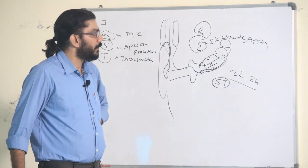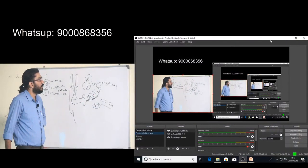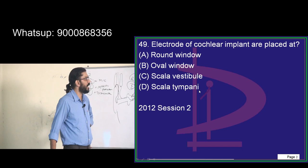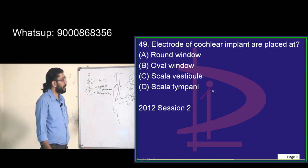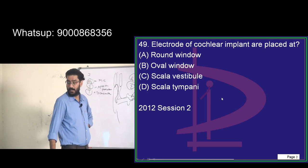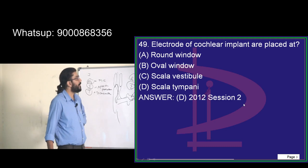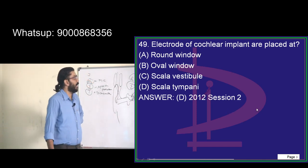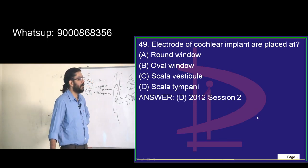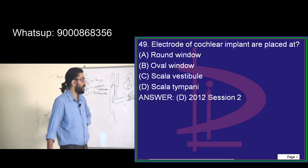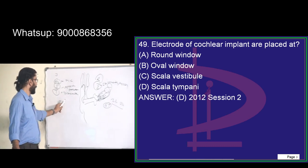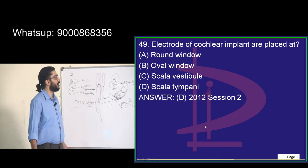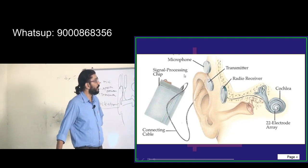Most of what you need is basic understanding only. Key structures: round window, oval window, scala vestibuli, and scala tympani. The oval window is at the top, and the round window is below it. The electrode goes through the scala tympani. In front of the round window, a cochleostomy is performed — similar to a mastoidectomy but specifically called cochleostomy.